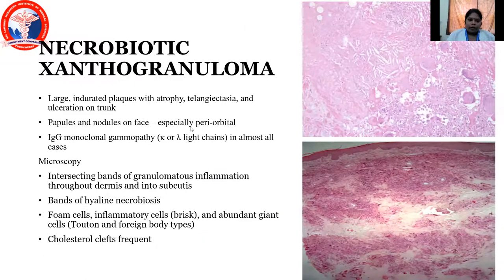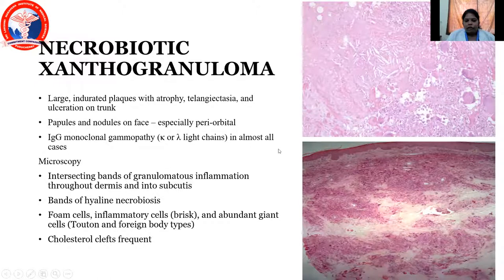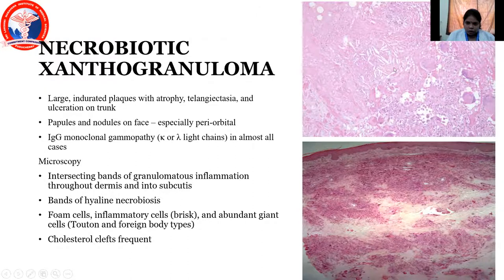Coming to necrobiotic xanthogranuloma, they are large indurated plaques with atrophy, telangiectasia, and ulceration on the trunk. Papules and nodules on the face, especially in the periorbital region, are usual, and it is associated with IgG monoclonal gammopathy. Microscopically, there are intersecting bands of granulomatous inflammation throughout the dermis and subcutis, bands of hyaline necrobiosis, foam cells, inflammatory cells, Touton type of giant cells, and cholesterol clefts.